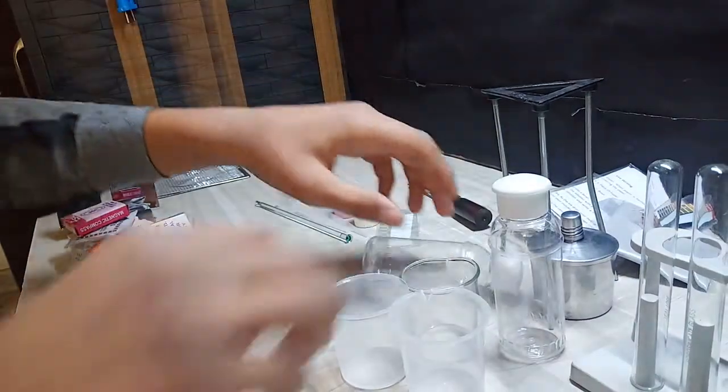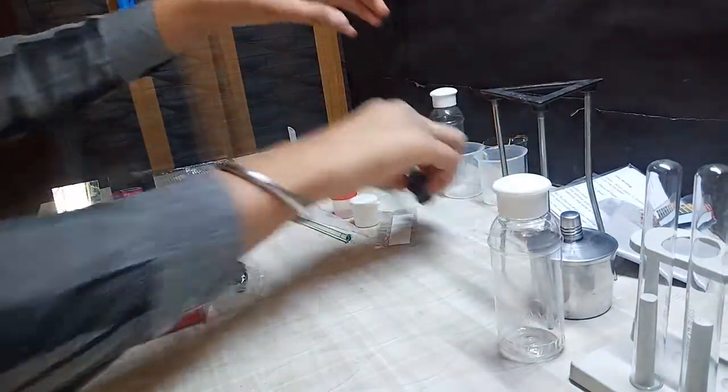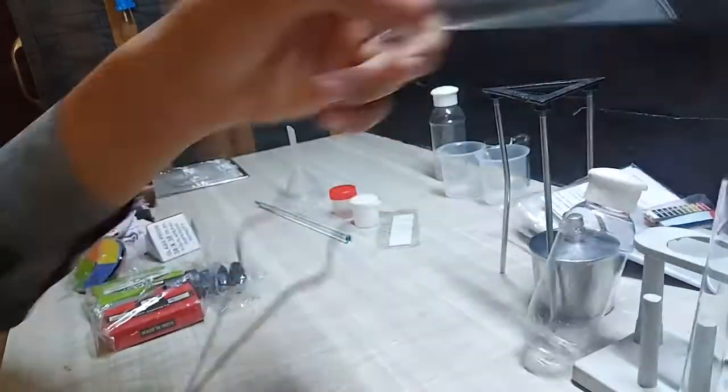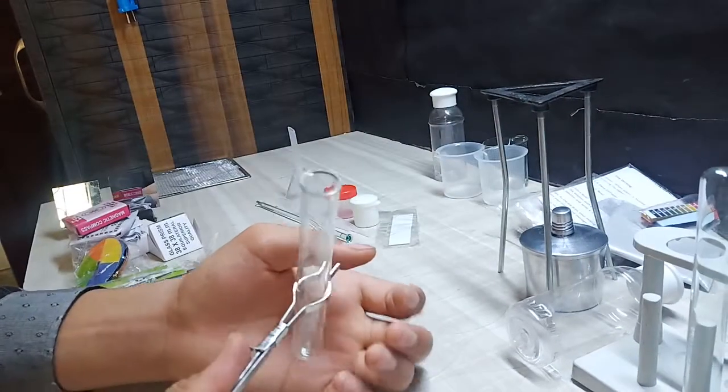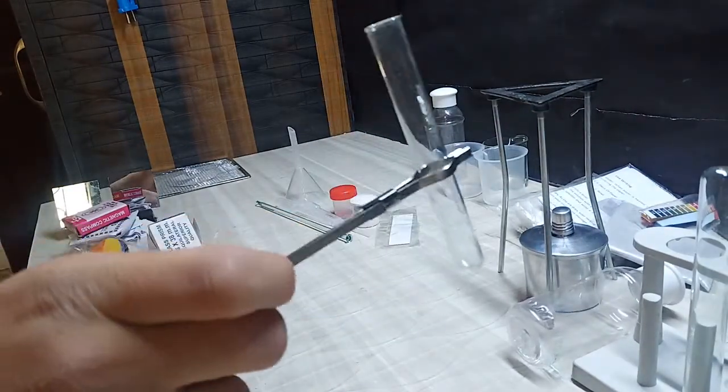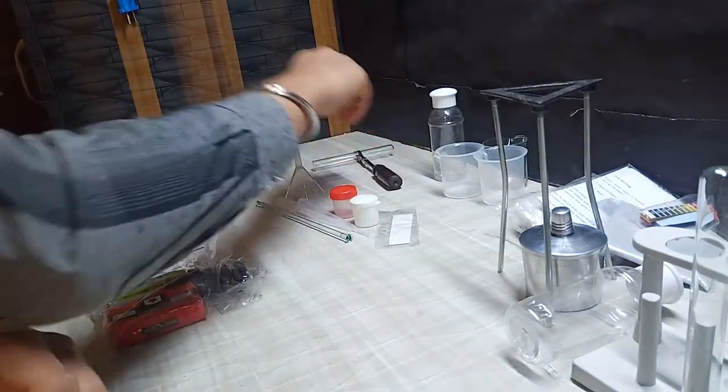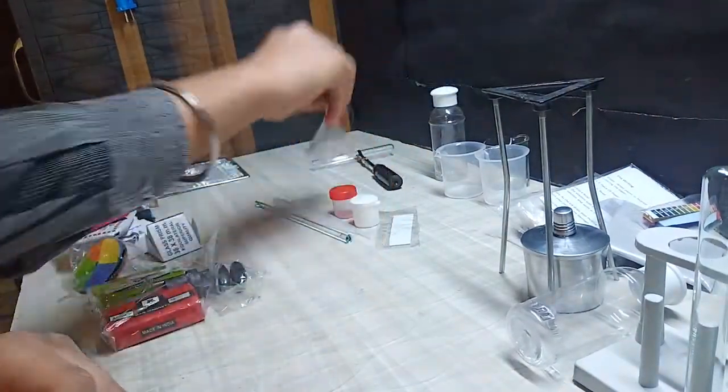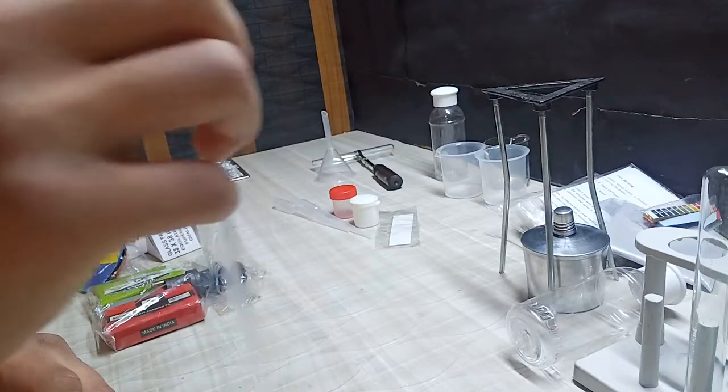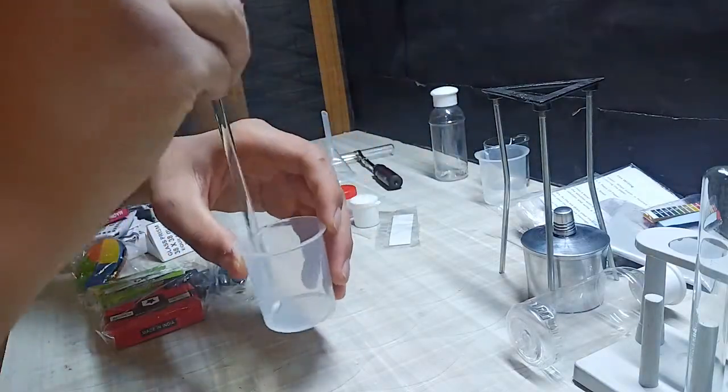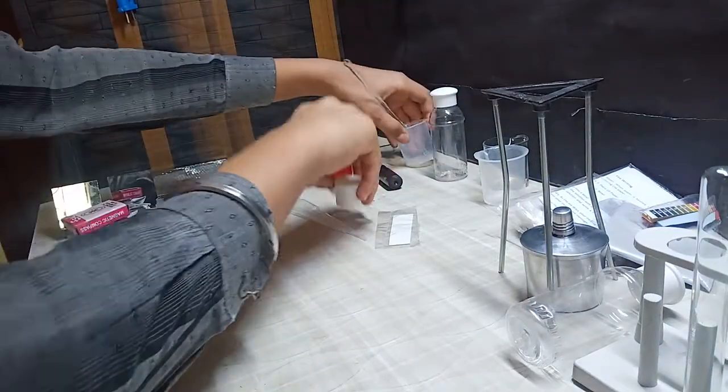This is to hold the test tubes when they are hot, so we require this pair of tongs to hold them. This is a funnel which is used to pour liquid into the beaker like this.